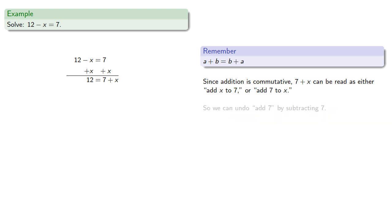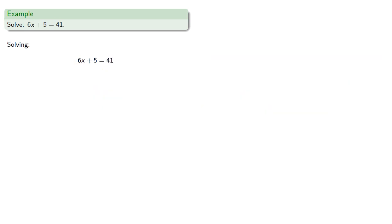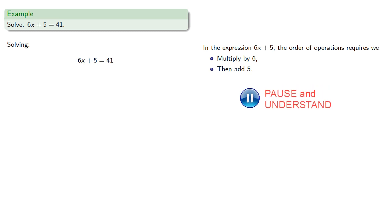Remember that the last thing we do is always going to be determined by the order of operations. So in this expression 6x plus 5, the order of operations requires we first multiply by 6 and then add 5. So the last thing we do is to add 5, and so to solve we begin by subtracting 5.